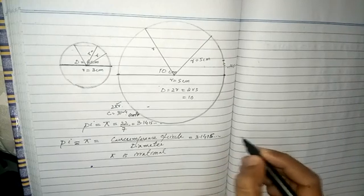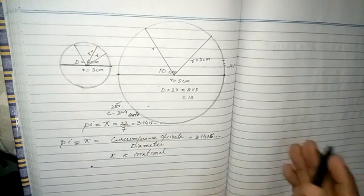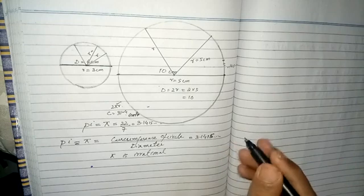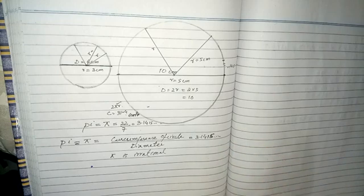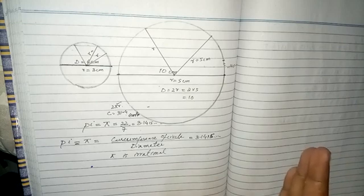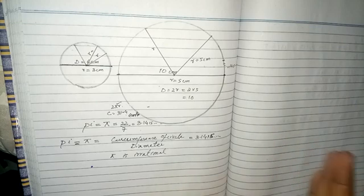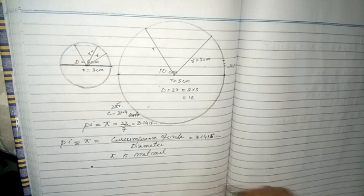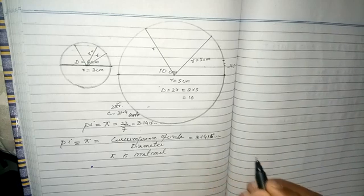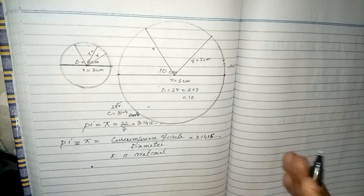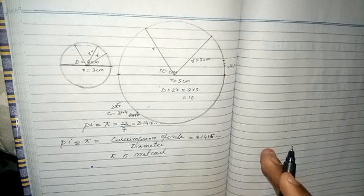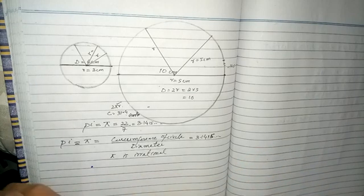Pi is an irrational number — its value never terminates and never repeats. To this day, mathematicians have computed the value of pi to about a trillion decimal places, but they have never reached the end and the decimal digits have never repeated themselves. If you find this video helpful, please like, comment, and subscribe to my channel. Thank you.